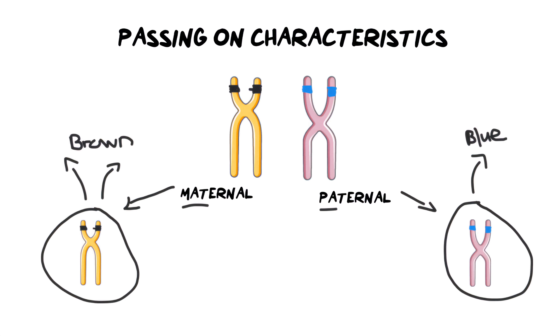And so essentially what I'm getting at here is when you pass on your characteristics, you can only pass on one of the two alleles that you have at a time. You can never pass on more than that, because if you do, you have created a chromosomal mutation.